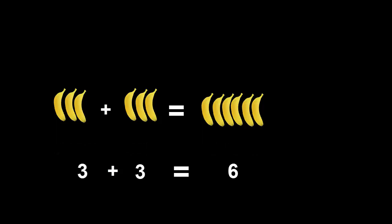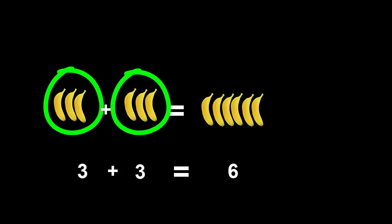But can you see that three plus three is like two bunches of three bananas? Instead of writing three plus three, we can write two multiplied by three bananas. That's what multiplication means.